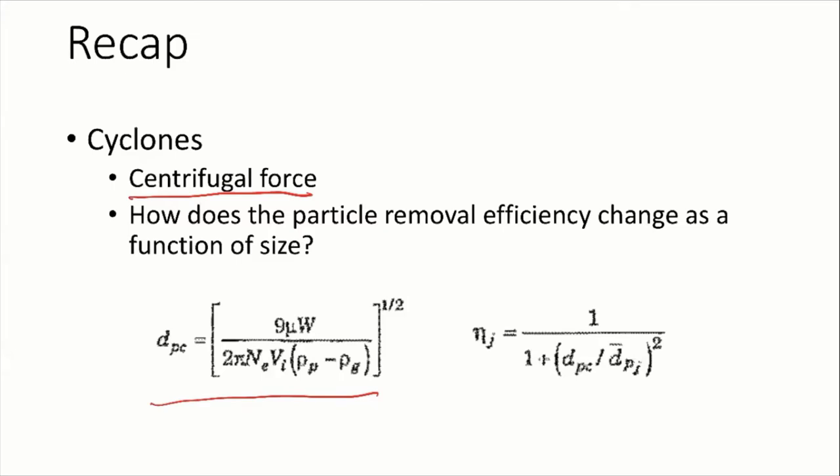The downstream particle collection systems can deal with the remaining smaller particles. That's why in your project you see it's either pre-cleaner with a baghouse filter or pre-cleaner with ESP. Based on the PM mass concentration or the size distribution, you should be able to design a cyclone that suits the purpose of removing the particles.